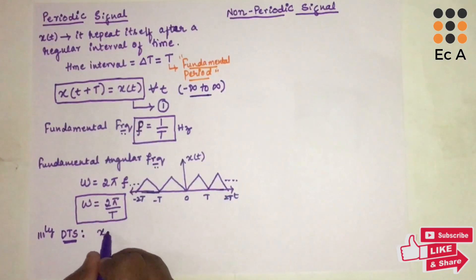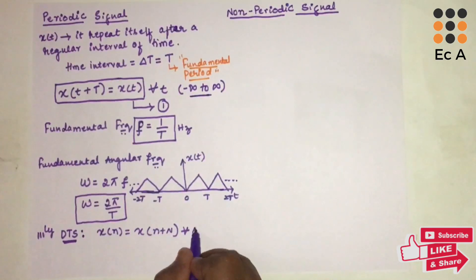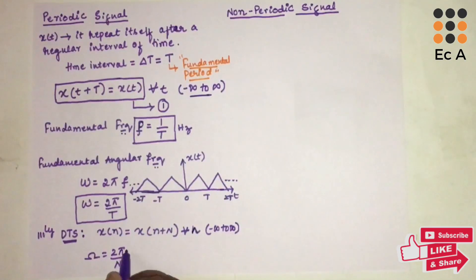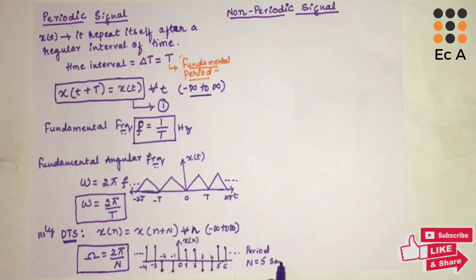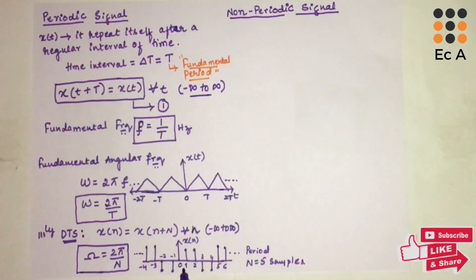Similarly, for a discrete time signal, the signal will be periodic if it satisfies the condition x of n equals x of n plus N, for all values of n from minus infinity to plus infinity. The angular frequency of this discrete time signal is given as 2 pi by capital N. In this example, the fundamental period is N equals 5 samples — after 5 samples the signal repeats itself, from 1 to 5, and this repeats from minus infinity to infinity.